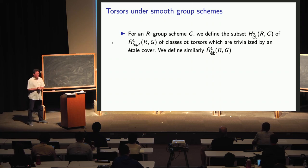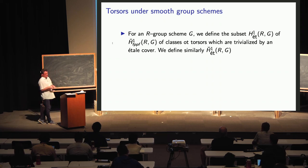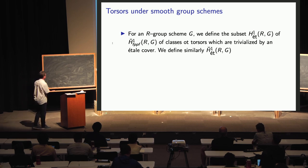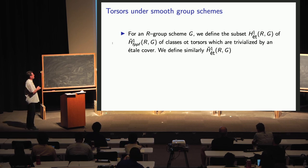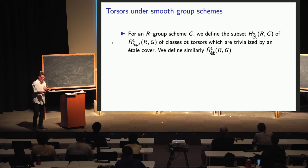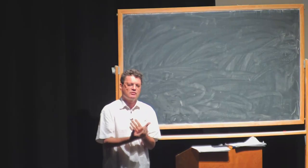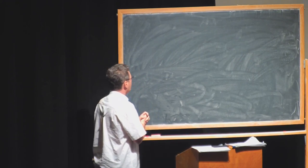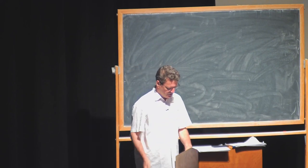When we look at torsors for smooth group schemes, you can look at the subclass of G-torsors which are locally trivial for the étale topology — we have seen locally trivial for Zariski, but now locally trivial for étale. You can similarly define the corresponding cohomology object.